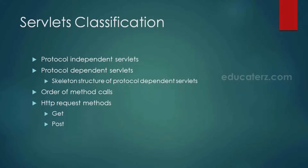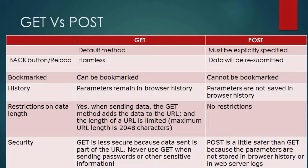A request from the web client can come to the web server in two ways: either a GET or POST request. These are known as HTTP request methods. GET is the default request method, whereas POST must be explicitly mentioned.